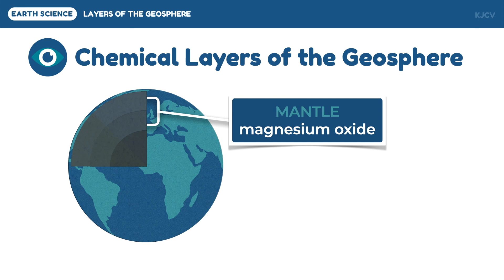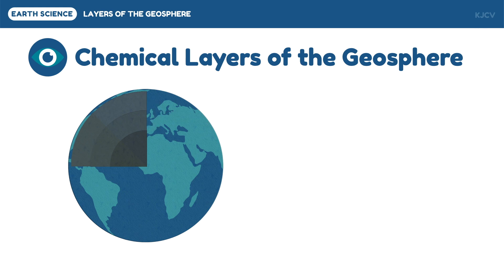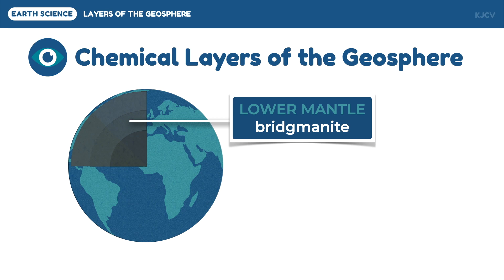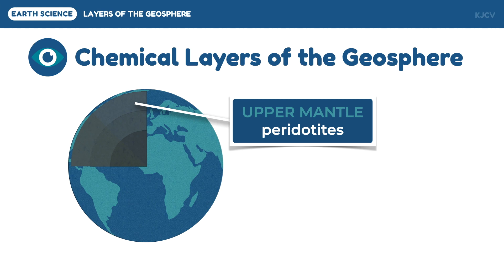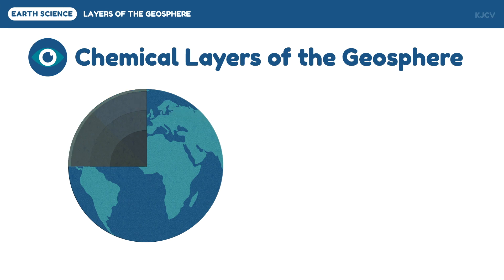The middle layer is the mantle. Its major composition is magnesium oxide, which distinguishes it from the core and the layer above it. The mantle is divided into two layers, also differentiated based on the dominant material found in each. Seismologists noticed the velocity of waves first drops abruptly in the upper layer but slowly increases as the waves reach the lower layer, suggesting two distinct layers. The lower mantle is composed of bridgmanite, a type of perovskite made up of magnesium, iron, and calcium silicates. The upper mantle is mostly made up of peridotites — dark-colored igneous rocks that contain magnesium and iron and only a very small amount of silica.